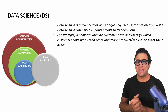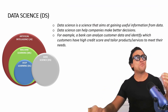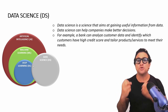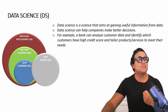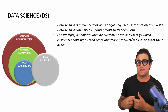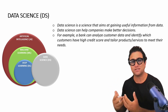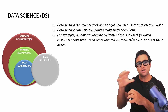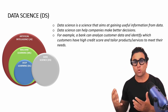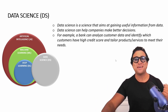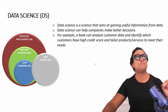The last field is data science. Data science is essentially the science that aims at gaining useful information from data, and it touches base on deep learning, machine learning, and artificial intelligence as well. With data science, companies can make better decisions. For example, a bank can analyze customer data, identify which customers have a high credit score, and tailor specific products and services to meet their needs.